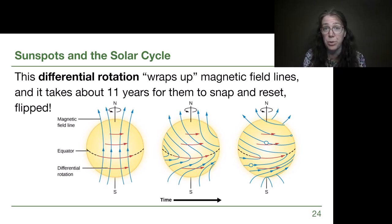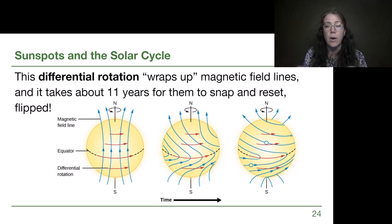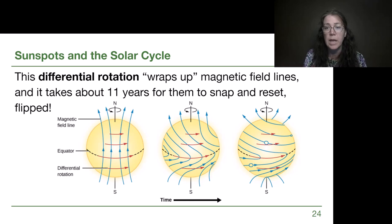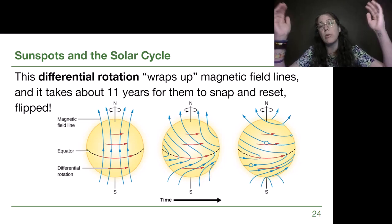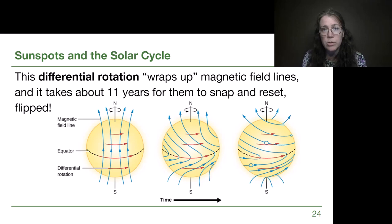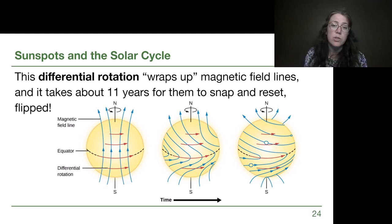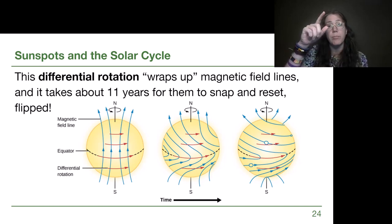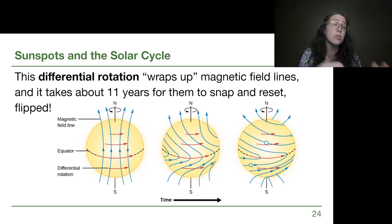Magnetic reconnection is a real thing. We had one set of field lines and how they link to each other, and there's an almost instant reset where they point in a different direction. When they reset at the end of 11 years, instead of going from south to north, they'd be going from north to south. Some astronomers emphasize that the solar cycle is really a 22-year cycle because that's relevant to how the magnetic field interacts with Earth's magnetic field. But the period of maximum and minimum repeats every 11 years, and every two of those we get back to where we truly started.